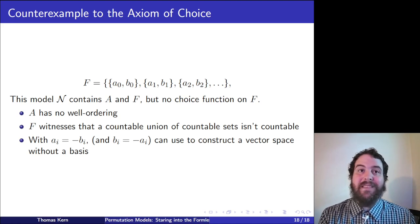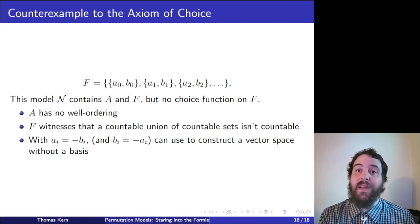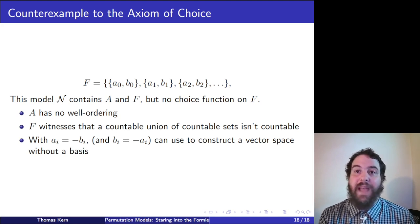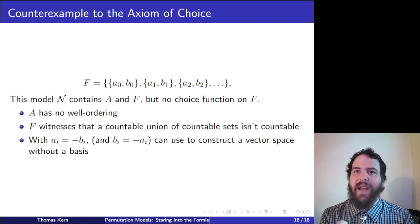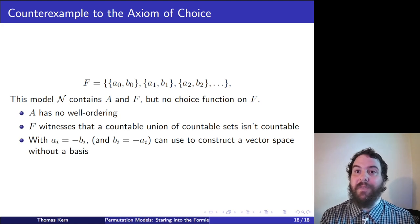This model contains A and contains F — our countable set of pairs — but does not contain any choice function on F, because choice functions on F don't have finite support. So we have a set without a choice function: a counterexample to the axiom of choice. All properties equivalent to the axiom of choice also fail in N. For instance, F's union A has no well-ordering, and a countable union of countable sets (F) is not countable.